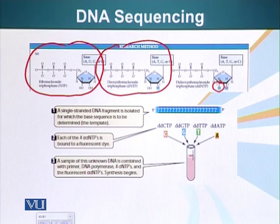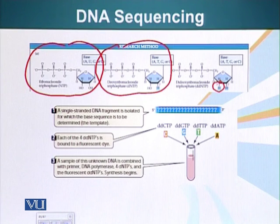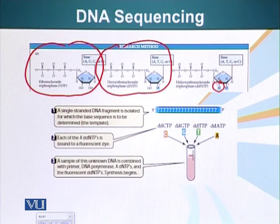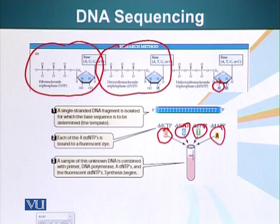We make 4 different types of di-deoxyribonucleosides, one for each base present in the DNA. The special thing about these di-deoxyribonucleosides is that they contain a glowing molecule which is specific to each base. For example, C is red, G is blue, T is green, and A is yellow.